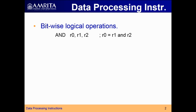First of all, bitwise logical operations. In the previous lecture we have seen arithmetic operations such as add, subtract, etc. In this session we are going to start with bitwise operations. The first one is AND operation: AND R0, R1, R2. The operation done here is R0 equal to R1 AND R2.